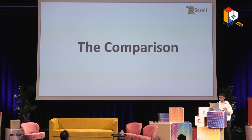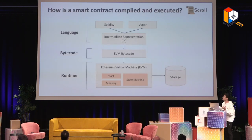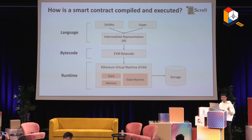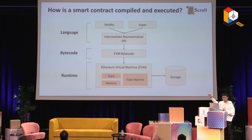To understand ZK EVM, you have to understand how a smart contract is compiled and executed. There are three different levels. First is the language level — most Solidity developers write Solidity or any EVM-compatible language. From the language level, you compile down to some intermediate representation, or IR. This IR is different from EVM bytecode — it's more high-level and retains some high-level semantics of your program. Then there is the bytecode level, which is EVM bytecode, well-defined in the Ethereum virtual machine yellow paper, with push, pop, add, and all those machine language instructions.